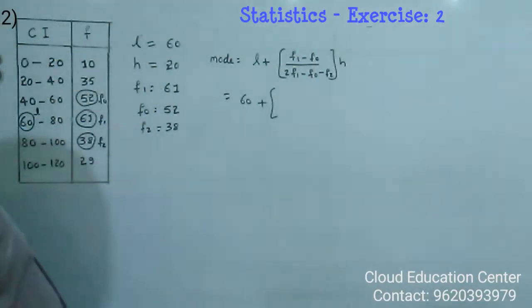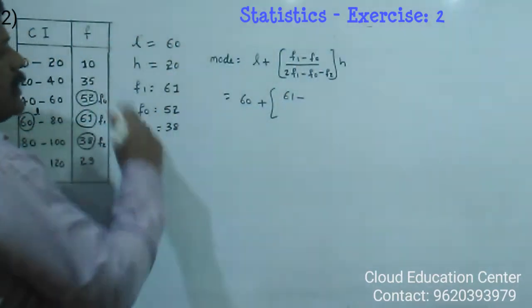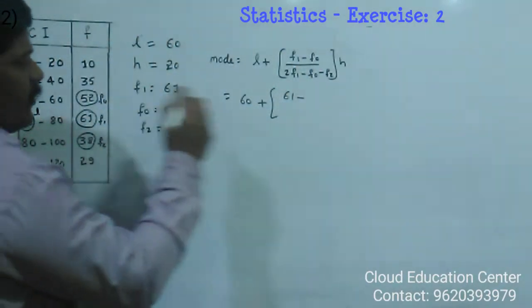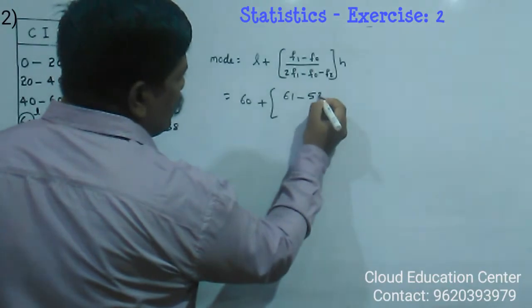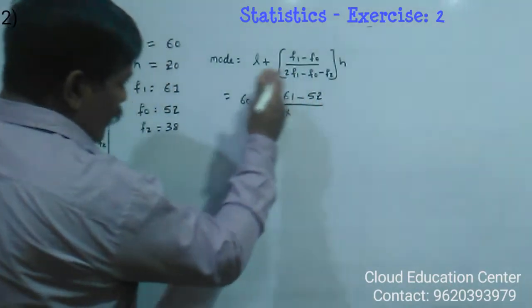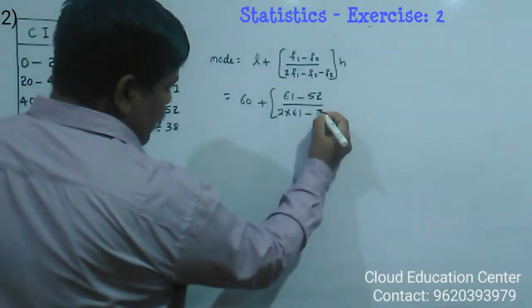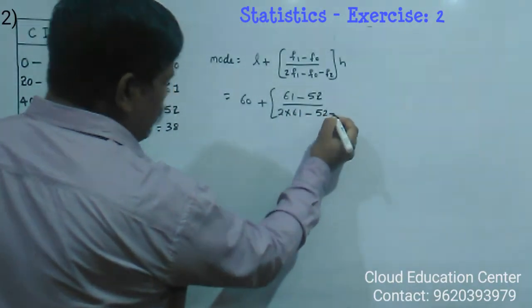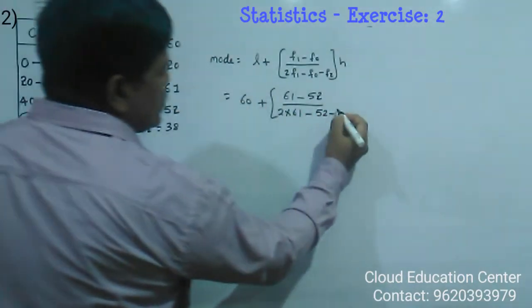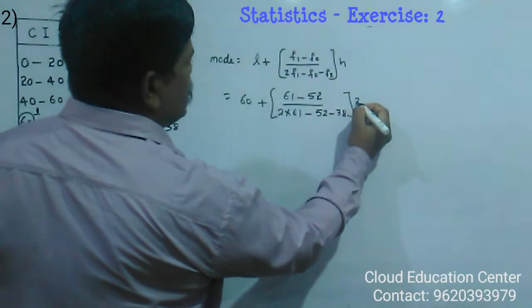60 plus 61 minus 52 divided by 2 into 61 minus F0 is 52 minus F2 is 38 into H is 20.